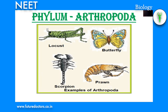Excretory organs are Malpighian tubules opening into the gut, or green glands opening directly to the exterior. The nervous system consists of a nerve ring and a double ganglionated ventral nerve cord. Arthropods reproduce by sexual methods; fertilization is usually internal. They are generally oviparous but a few are viviparous — example: scorpion. Phylum Arthropoda is divided into five classes, including class Crustacea (example: Palaemon — prawn and crab) and class Myriapoda (example: millipede and centipede).